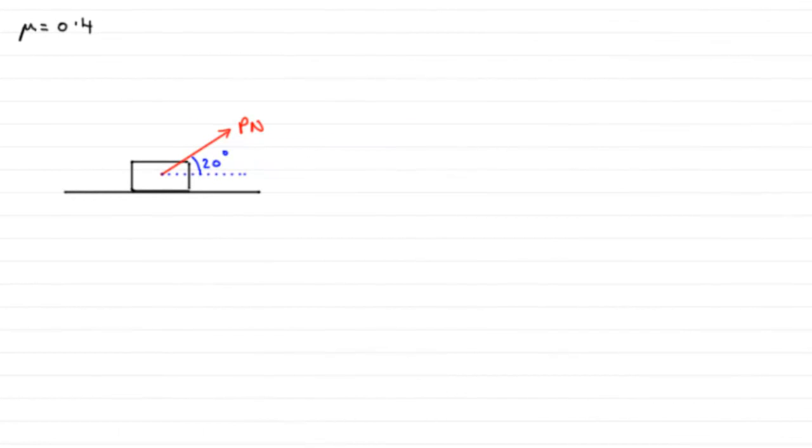Now in this question, we're given this particle of mass 30 kilograms and it's acted upon by this force of P newtons at 20 degrees to the horizontal. It's moving at a constant speed on this rough horizontal plane where the coefficient of friction is 0.4, and we've got to find out the value of P.